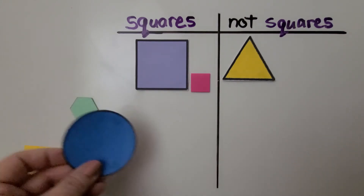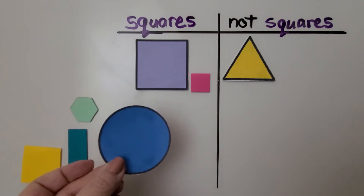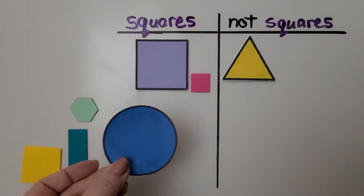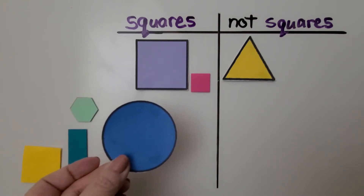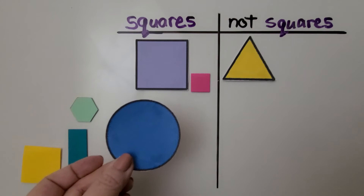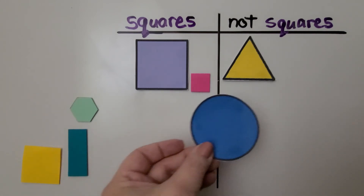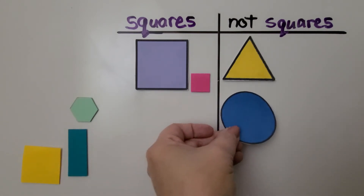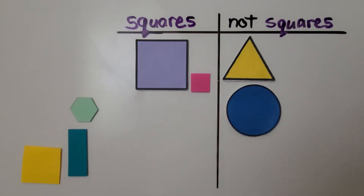Is this a square? No, this has a curve going around. It's round shaped. This is a circle. That's not a square. We can put it here with the not squares.